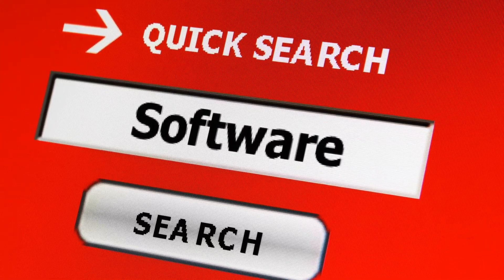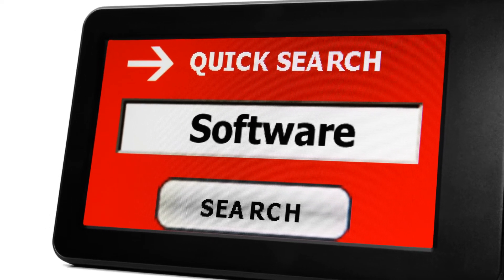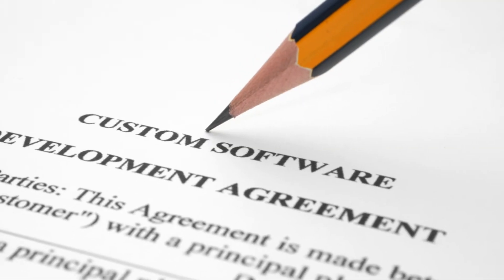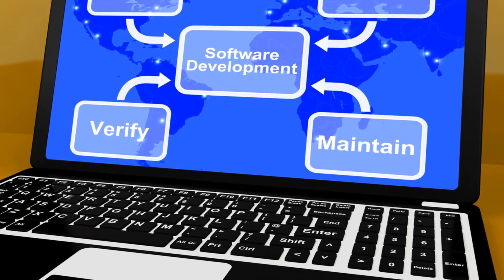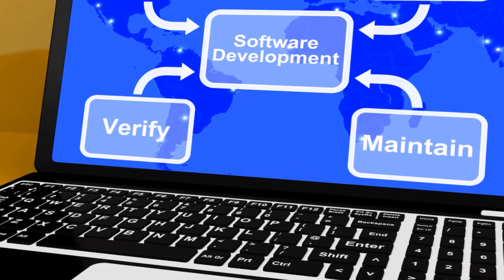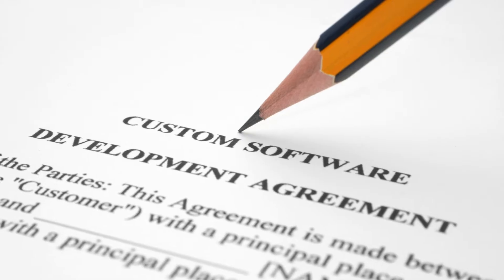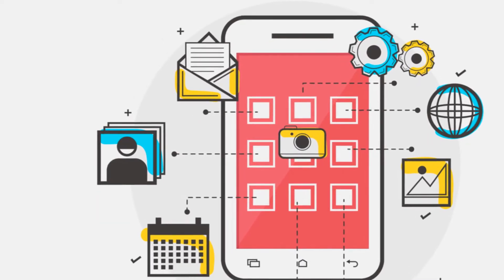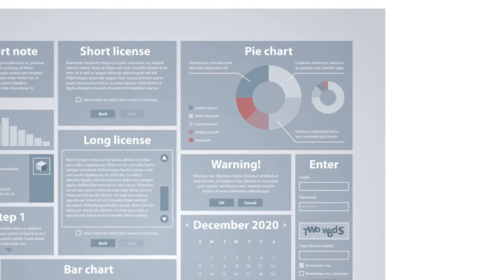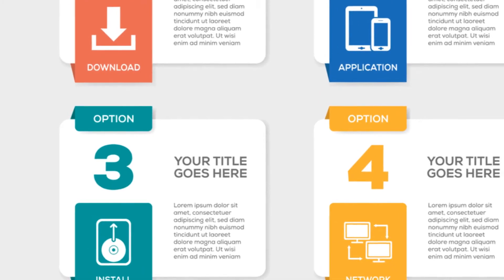Functional completeness is about the software providing all the necessary functions. It's like buying a car — you expect it to have all the necessary parts: wheels, engine, seats. Similarly, a software should have all the necessary functions to perform its task. Next, functional correctness is about the software performing its functions correctly. Going back to our car analogy, it's not enough for the car to just have an engine — the engine needs to work properly. Similarly, the functions of a software need to work as intended. Lastly, functional appropriateness is about providing functions that are appropriate for the task. If you're buying a car for family use, you'd want enough seats, not just a powerful engine. Similarly, a software should provide functions relevant and useful to the user's needs.